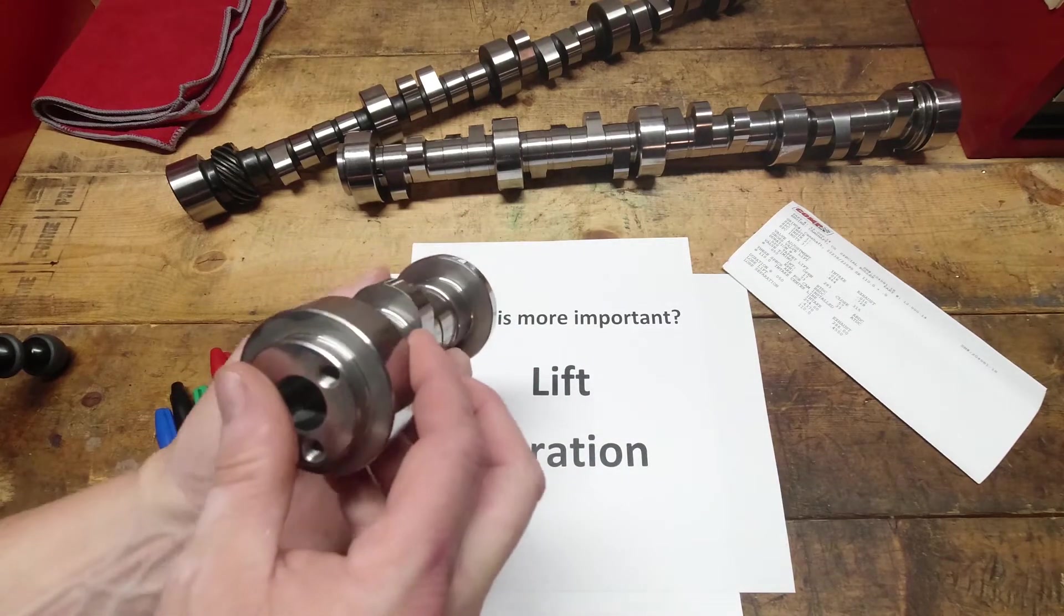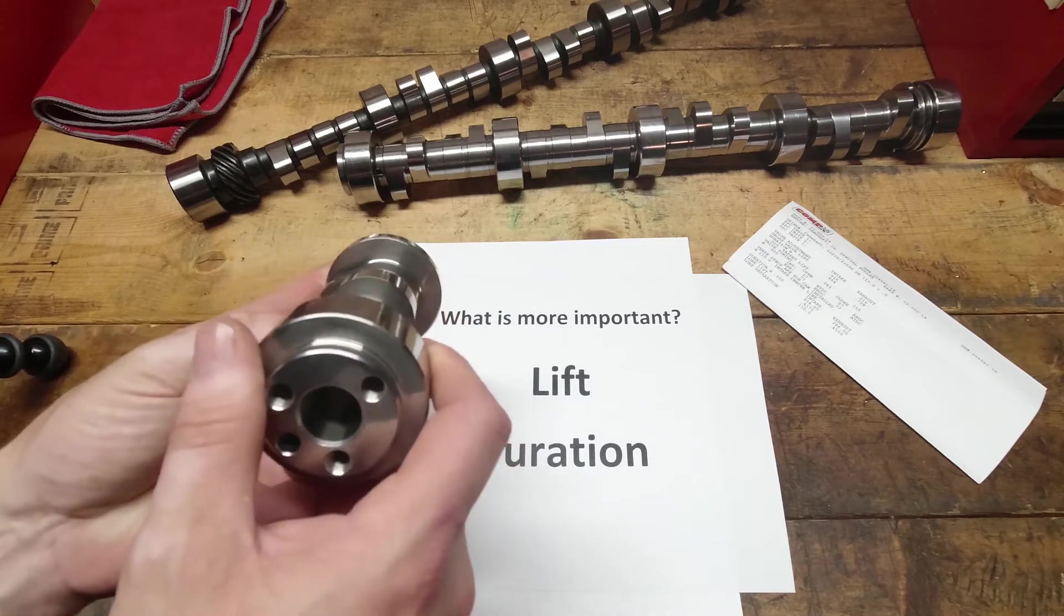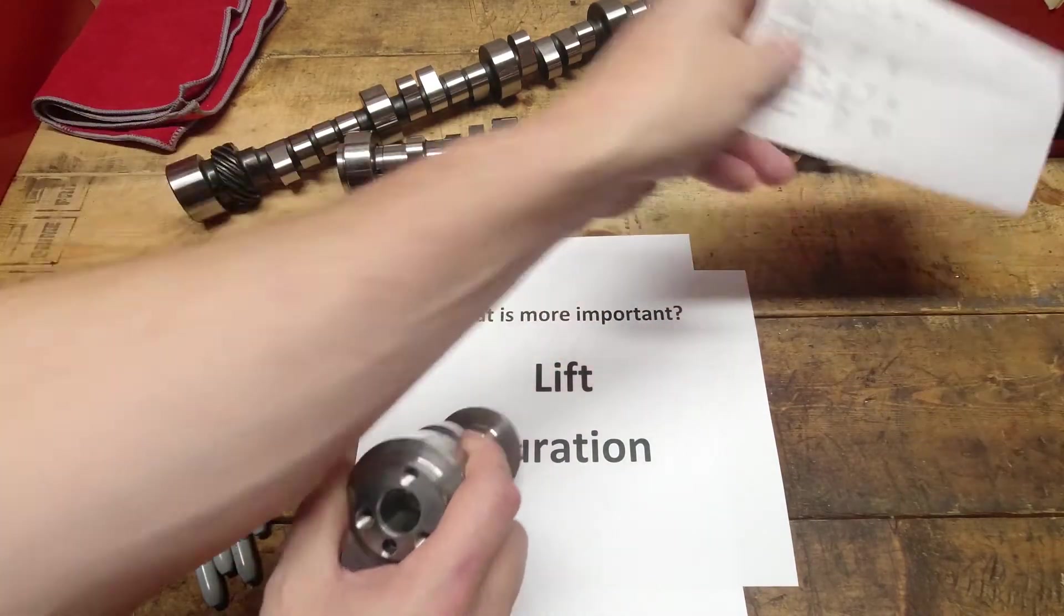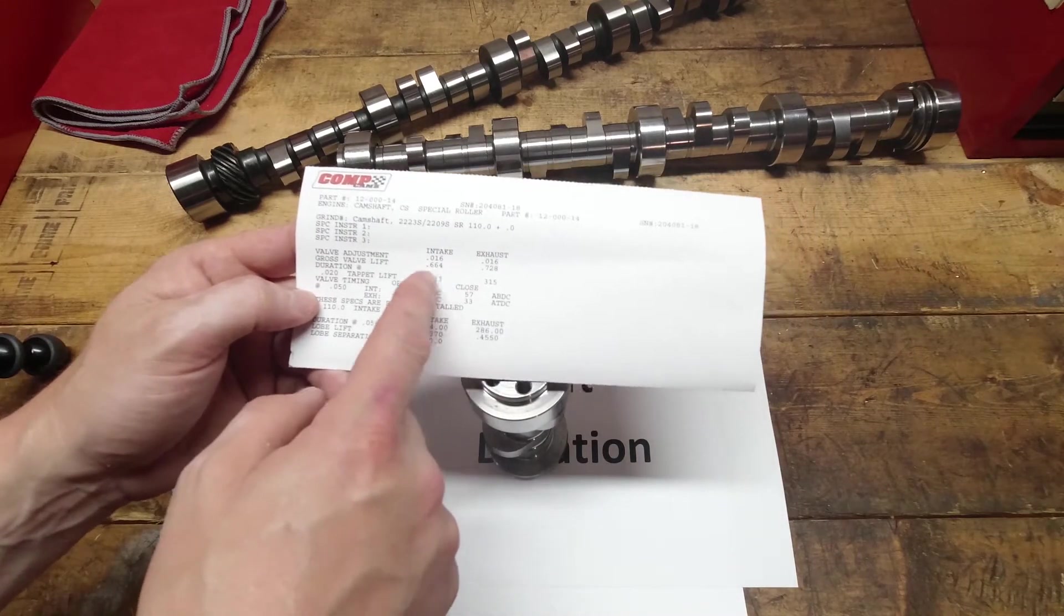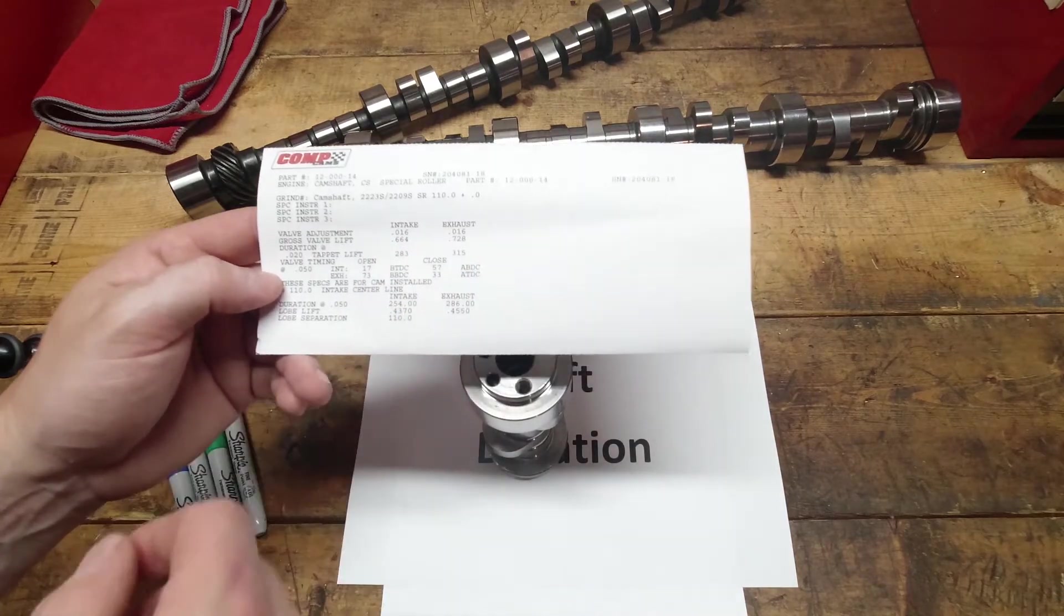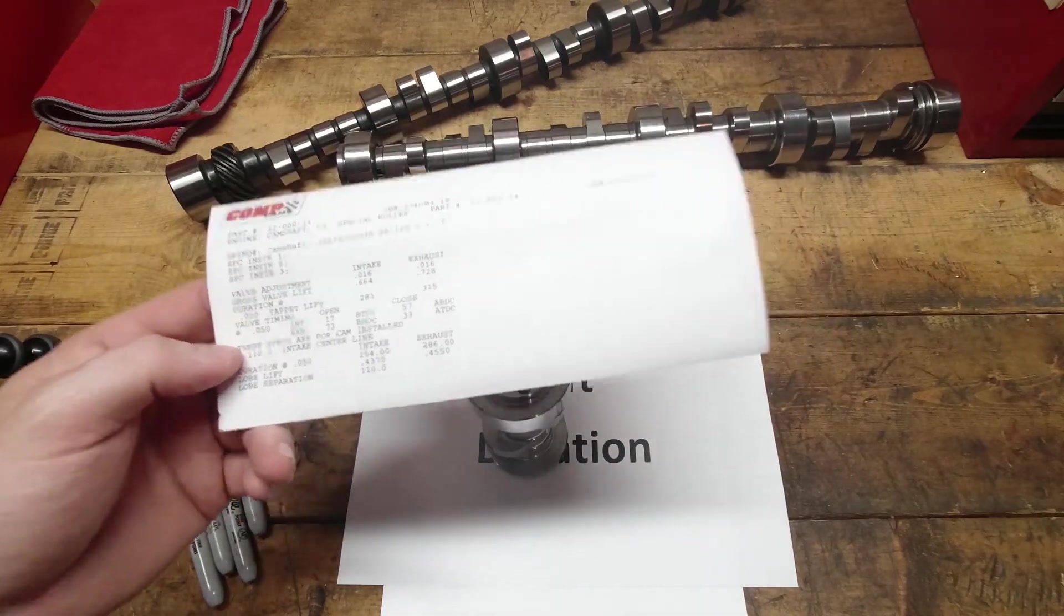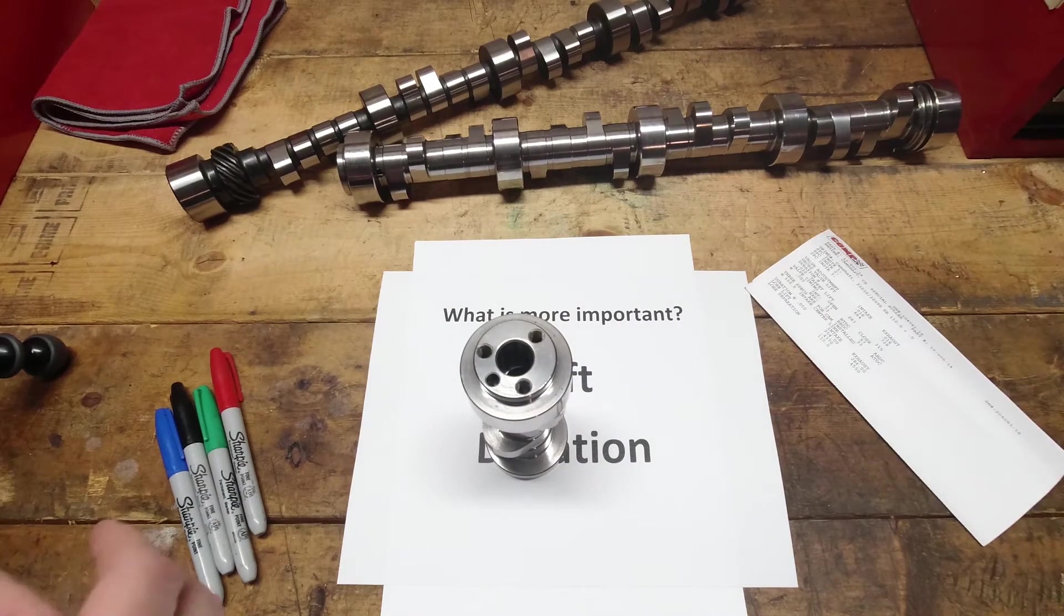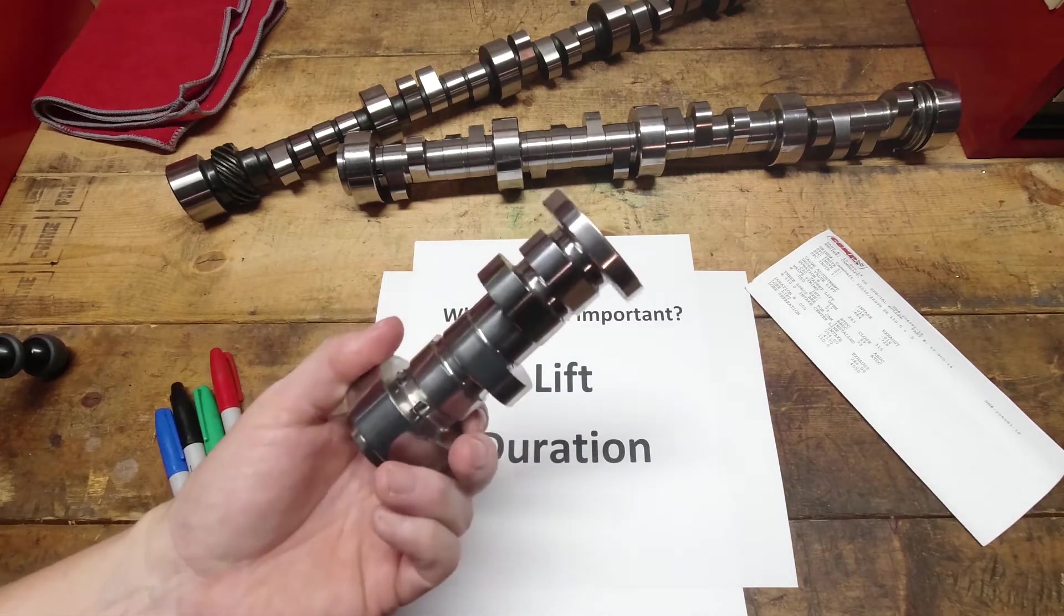If you look at a camshaft, the lift is the max amount of lift that opens up the valve. It's the max number, it's what you see on a cam card. When you're looking at it, it'll tell you that at 50 thousandths lift, or excuse me, the gross lift is 664, 728 on this small block Chevy cam. And that spec is very important, especially when you talk about piston to valve clearance. Certainly you don't want the valve touching the piston when you're driving. It's not going to last that long if you do. So lift is certainly a very important number.